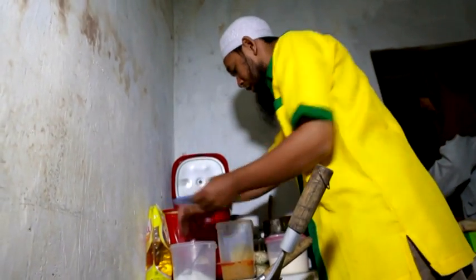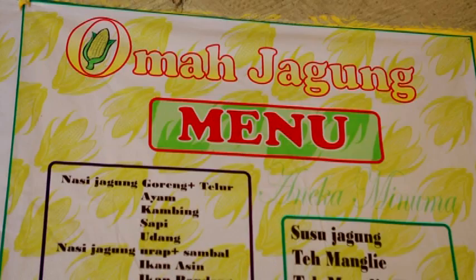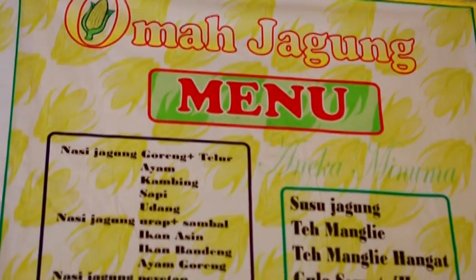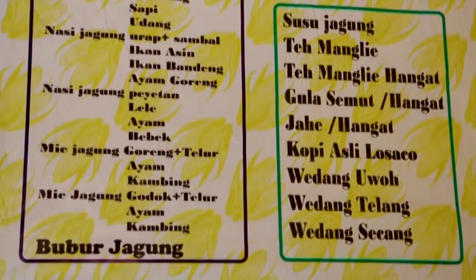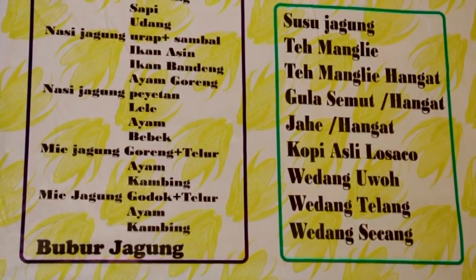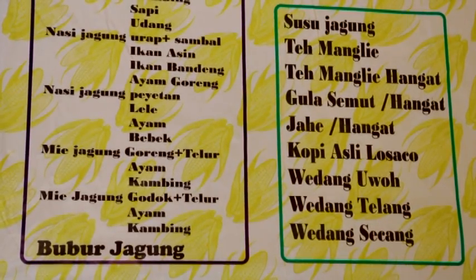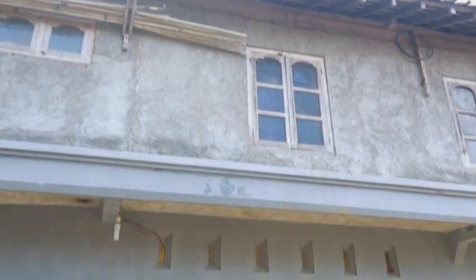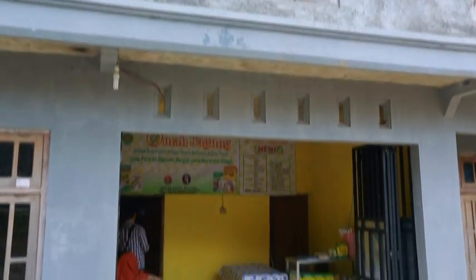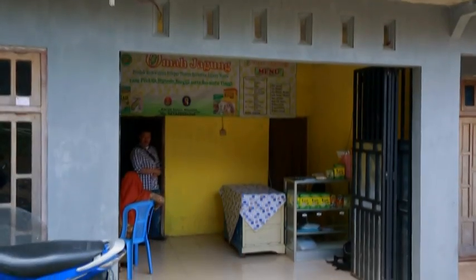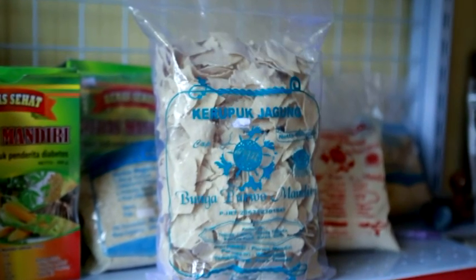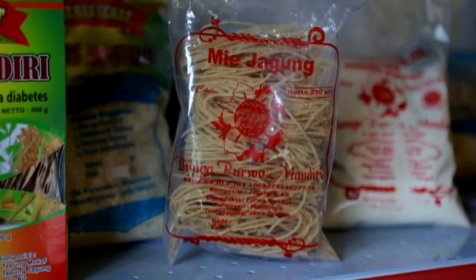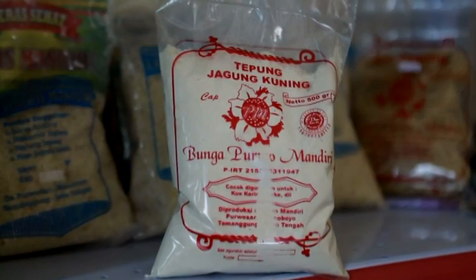Warung makan ini milik lelaki paruh baya bernama Supario. Menu makanan dengan berbagai olahan masakan jagung tersedia, ada nasi goreng jagung, susu jagung, bubur jagung, dan mie jagung. Selain menjual berbagai menu masakan matang berbahan jagung, warung Supario juga menyediakan bahan makanan berbahan jagung dalam kemasan kotak dan kemasan plastik. Selain dijual di wilayah tempat tinggalnya, Supario juga menjualnya hingga ke kota Jogja dan Magelang.